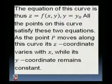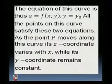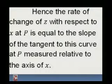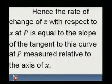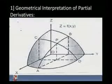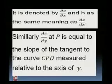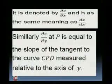All the points on this curve satisfy these two equations. As the point P moves along this curve, its z-coordinate varies with x while its y-coordinate remains constant. Hence, the rate of change of z with respect to x at P equals the slope of the tangent to this curve at P measured relative to the x-axis. It is denoted by ∂z/∂x and has the same meaning as dz/dx.